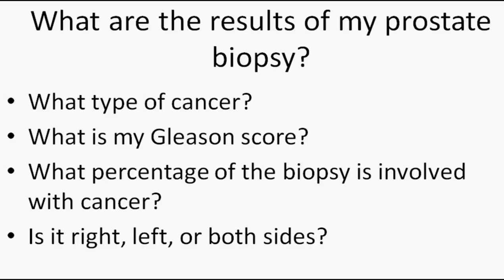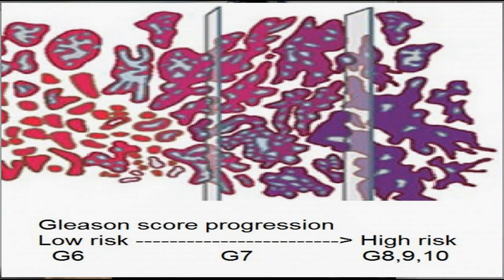The second piece of information to know about your biopsy is the Gleason score. This score determines how abnormal the cells are compared to normal prostate cells. The higher the Gleason score, the higher the chance the cancer could spread outside the prostate, and the lower the chance the patient would be cured. Gleason score starts at 6 — there used to be scores of 5 and 4, but they're no longer used. Gleason 6 is low-risk, Gleason 7 is intermediate-risk, and Gleason 8, 9, and 10 is the high-risk group.